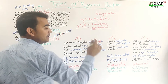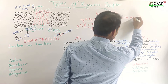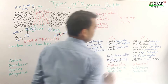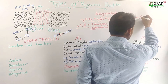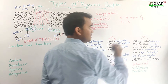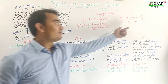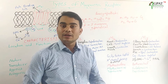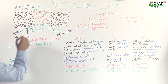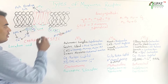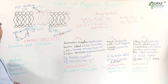Muscarinic receptors are divided into two types based on their functioning — odd and even. M1, M3, and M5 form one class; M2 and M4 form another. M1, M3, and M5 are coupled with Gq proteins, while M2 and M4 are coupled with Gi — meaning these have the inhibitory pathway, while the odd-numbered receptors have contractility mechanisms. So the receptors are divided into Gq-binding and Gi-coupling classes.